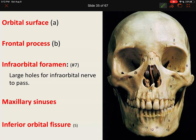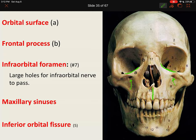Looking at the maxilla section: the infraorbital foramen consists of two large holes underneath the orbit. We also have an infraorbital margin, which is the region creating the orbit. The alveolar process — the word alveolar refers to bag-like — is the edge of the bone that holds your upper teeth. If you removed all your top teeth, you'd be left with bag-like spaces.